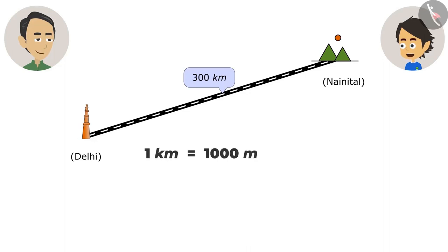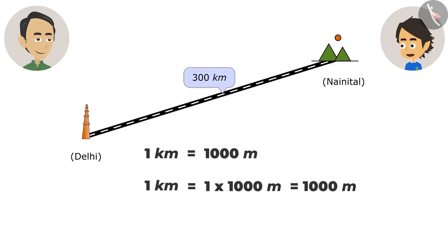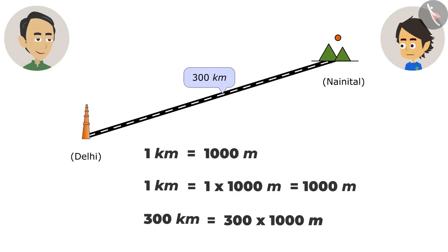As it is so far, we are going by train. If one kilometer is equal to 1,000 meters, how many meters away is Nainital? It is very easy to calculate — multiply by 1,000 to convert kilometers into meters. To convert 300 kilometers into meters, I have to multiply 300 by 1,000.